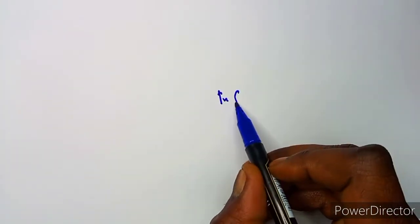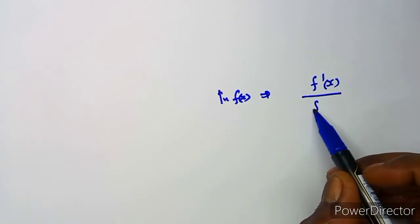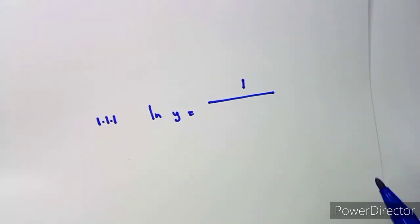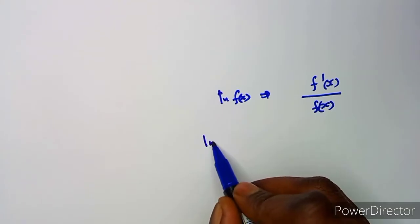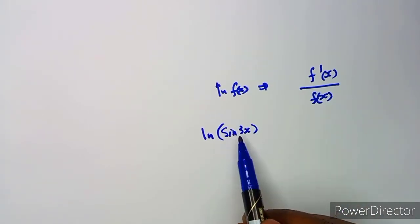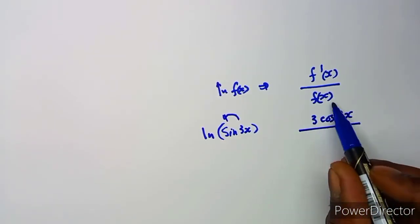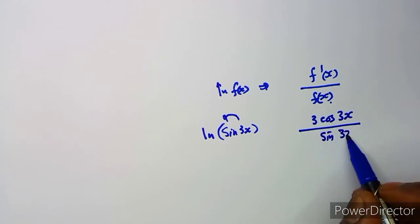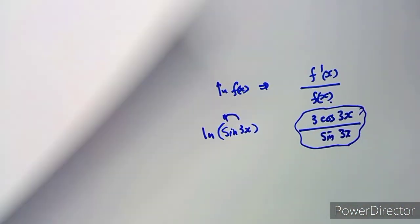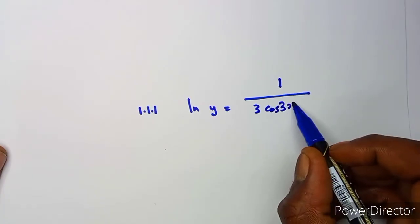Now, what about the derivative of ln(sin(3x))? Remember, if you have ln(f(x)), the derivative is f'(x) over f(x). So here with ln(sin(3x)), the derivative of sine(3x) is 3cos(3x), and that goes over the function sin(3x). So the derivative of ln(sin(3x)) is 3cos(3x) over sin(3x).